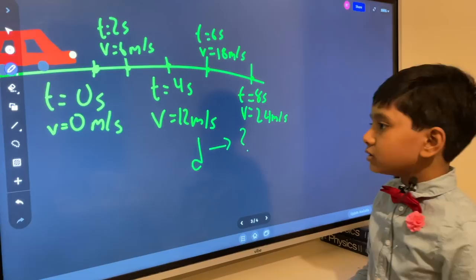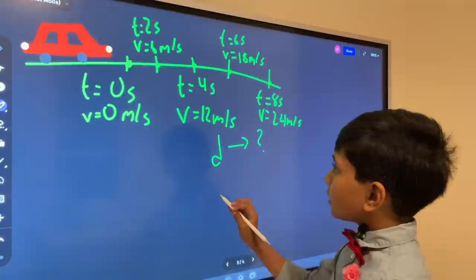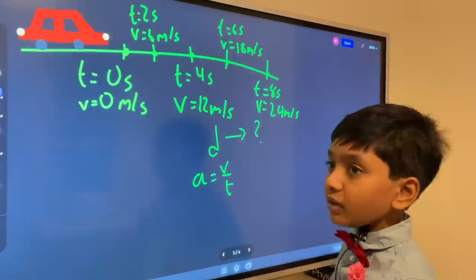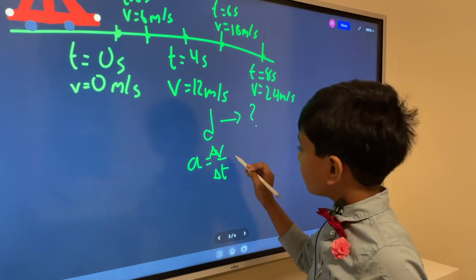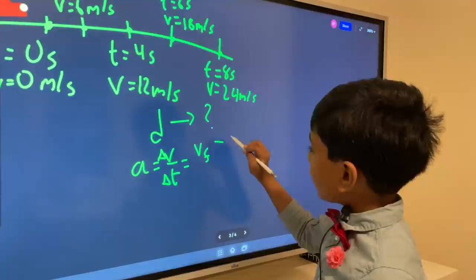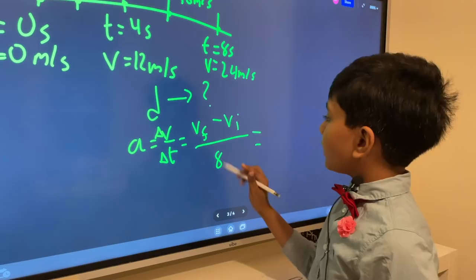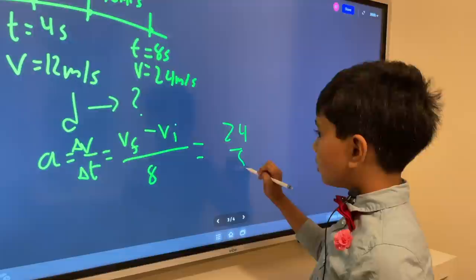So how can we find it? Well, we can always use the equation. A is equal to V over T. But remember, it's delta V over delta T. But the thing is, 0 T, so that means VF minus VI is just going to be, well, the change in T is 8, and VF minus VI is just going to be 24 minus 0. So 24, giving us 3.